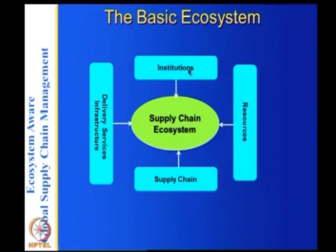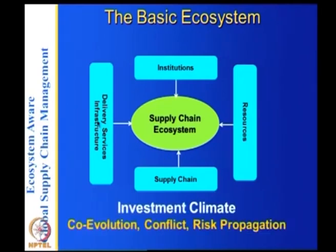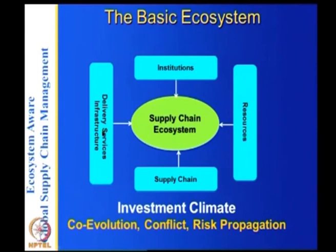The supply chain ecosystem figure shows supply chain resources, institutions, and delivery mechanisms — these three are called the investment climate. They are important for the co-evolution of innovations, conflict resolution, and risk propagation. Since they propagate risk, you have to be careful to mitigate it. The ecosystem framework not only gives a place for location selection but also identifies the risks the supply chain may possibly face and how to mitigate them.